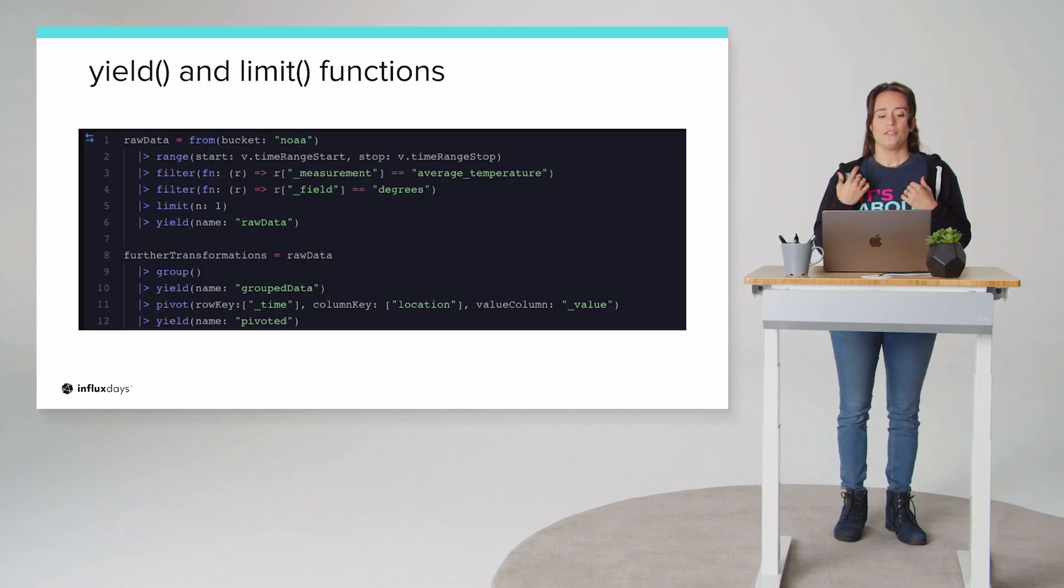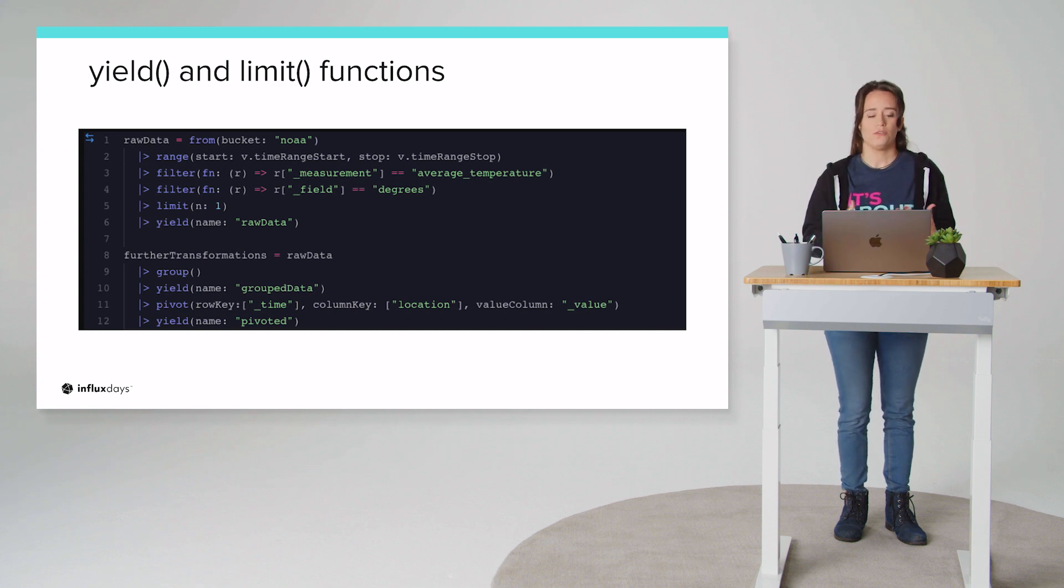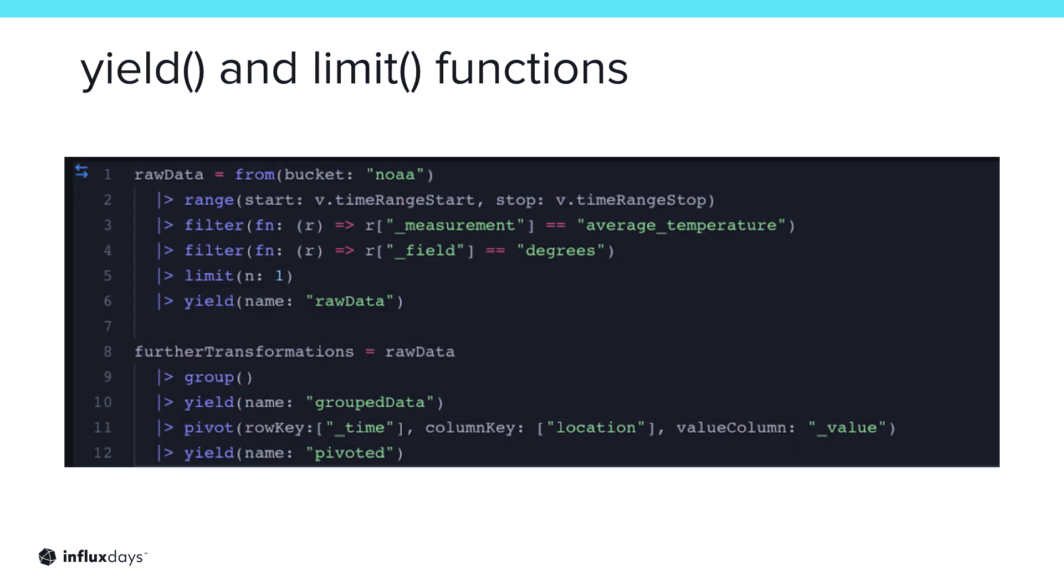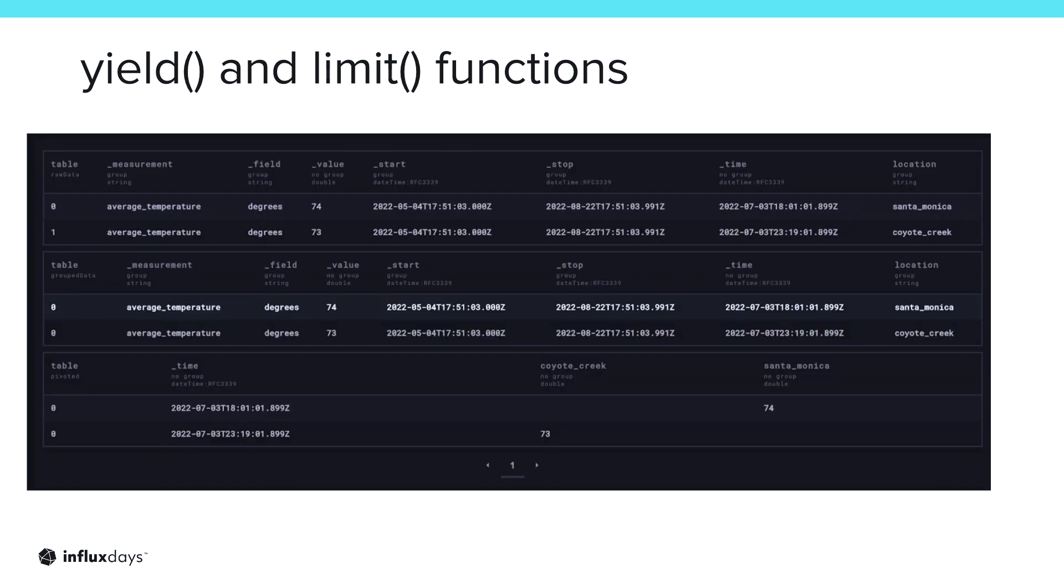And just to highlight what I mean by that, imagine, for example, that I want to explore some different transformations on my data. The first thing I would want to do is take my data, query for it, and store it in a variable. This is another tip that beginner Flux users might not be aware of. You can store your base query in a variable and then reference that variable so that you're not constantly querying for all of your data again, which will impact the performance of your Flux script positively. And so in this example, what I do is I query for my data, then I limit my results to just one so that I can visualize all of my Flux transformations on the same page in my data explorer. Then I use the yield function to name that result. I reference that raw data variable in another variable. I add some more transformations like a group and a pivot, and I name those results as well so that when I go to the raw data explorer, I can see all of those results together, and I can see how those functions have transformed not only the group keys, but also the shape and the pivot. And so in this way, I have a very intuitive understanding of how Flux is operating on my data.